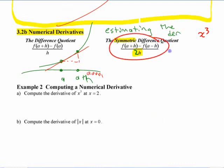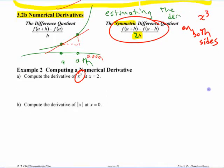This is why this one's better. You're going on both sides. If you want the numerical derivative of this, you can calculate it. Compute the numerical derivative just means use this. Don't actually do the limit.